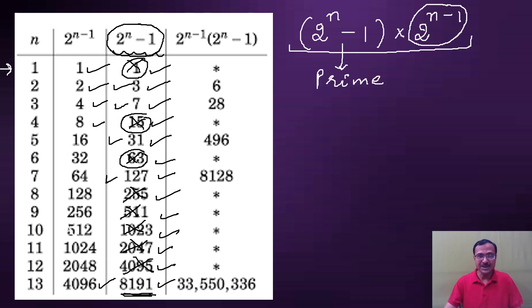Corresponding to these values where we get prime numbers like 3, 7, 31, 127, and 8191, if you multiply the two factors 2 raised to power n minus 1 and 2 raised to power n minus 1, you are going to get 6, 28, 496, 8128, and look at that number after that: 33,550,336. All these numbers are actually perfect numbers.